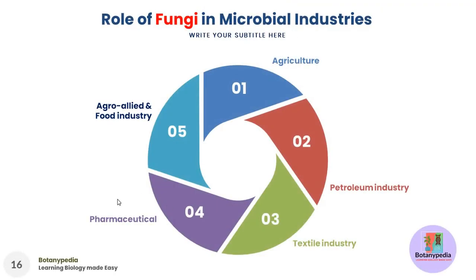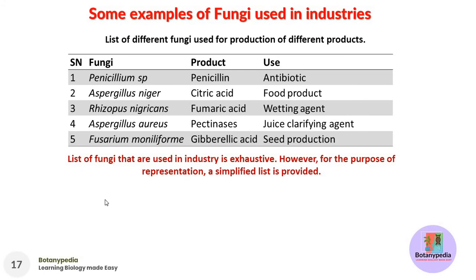We now move to the last part of this lesson, discussing the role of fungi in microbial industry. Different types of industries use different types of fungi, including agriculture, petroleum industry, textile industry, pharmaceutical industries, and agro-allied and food industries. This slide provides some examples of fungi used in industry, with five examples described here.